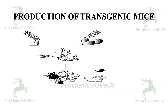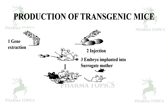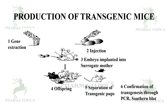The steps involved in producing transgenic mice are: gene extraction of the target gene; injection of the target gene into embryos; implantation of the embryo into a surrogate mother; production of offspring from the surrogate mother; separation of transgenic pups; and finally confirmation of transgenesis through polymerase chain reaction or Southern blot.